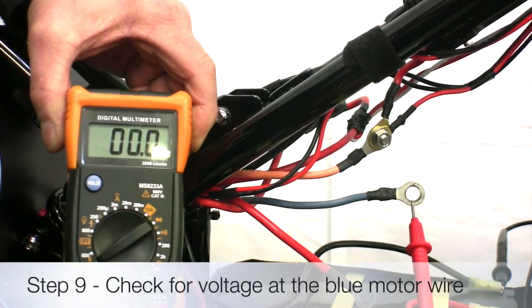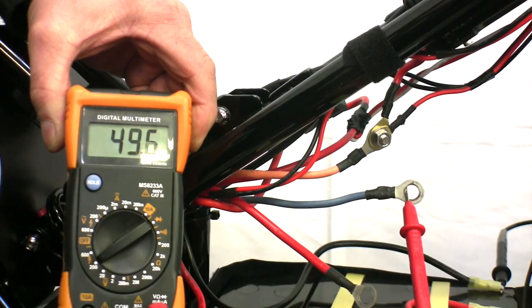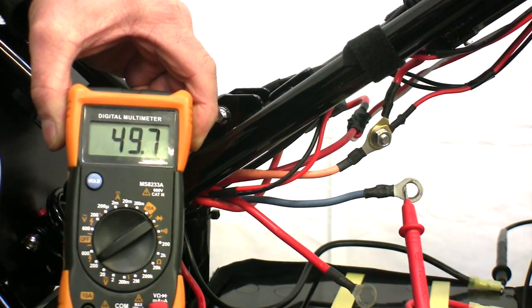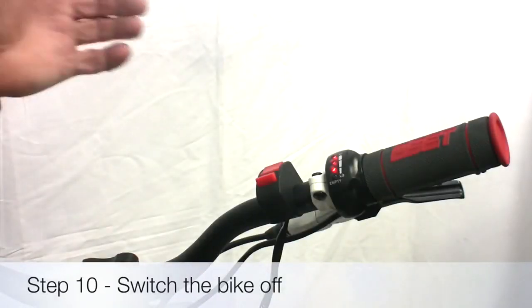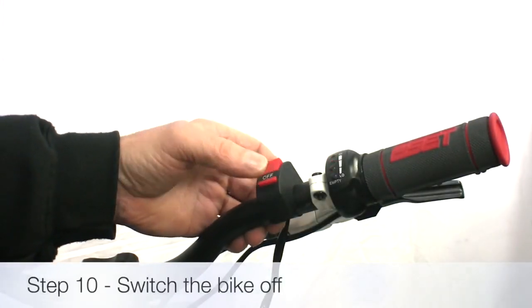Touch the red multimeter probe to the blue motor wire, checking for your original battery voltage recorded in step 1. Set both the key and handlebar switches to off.